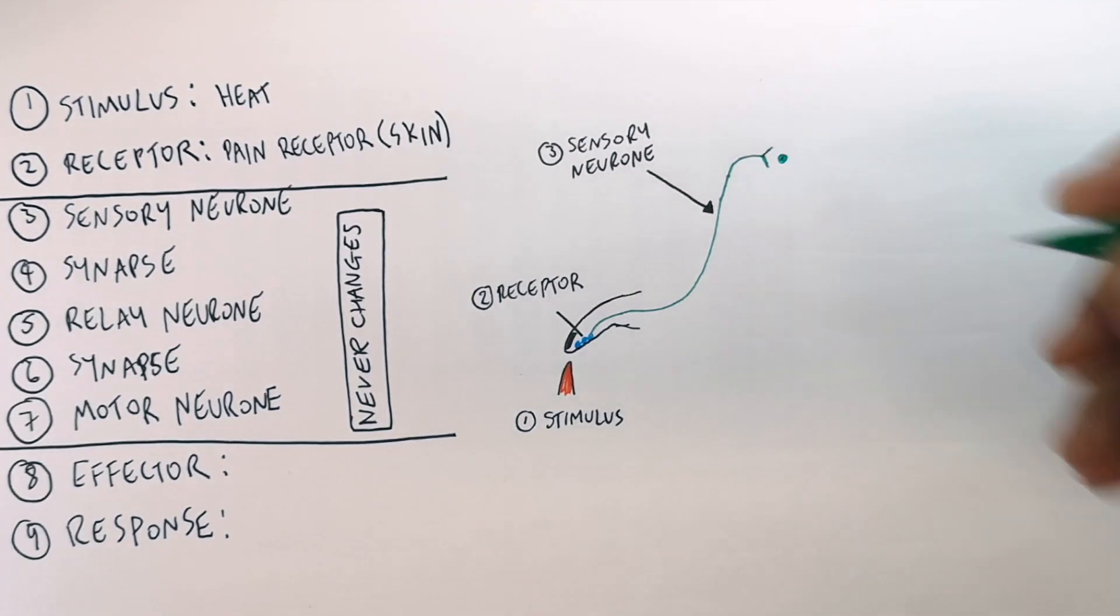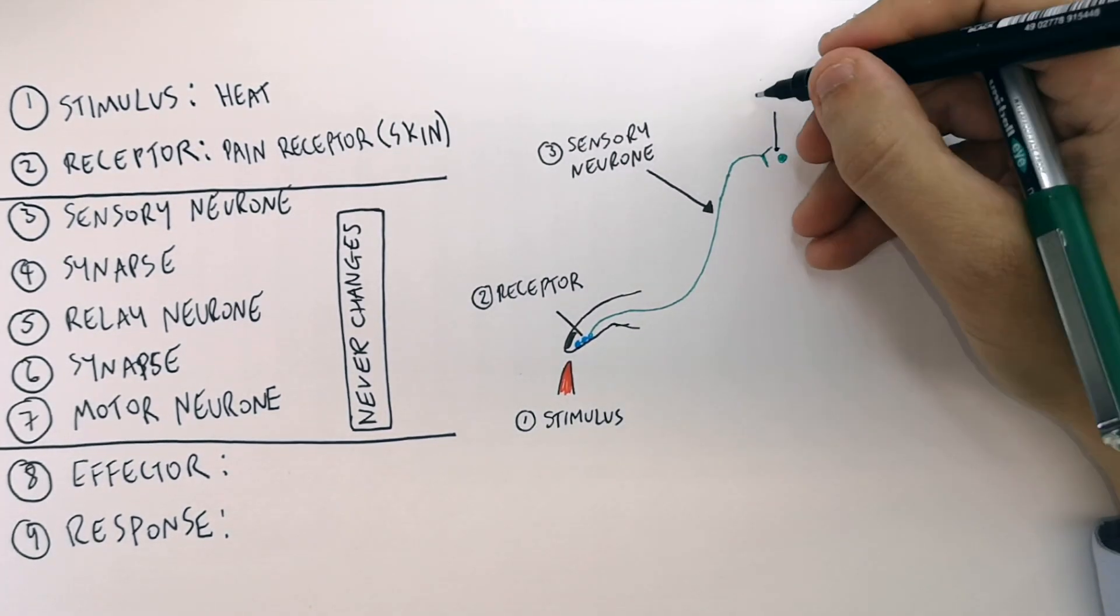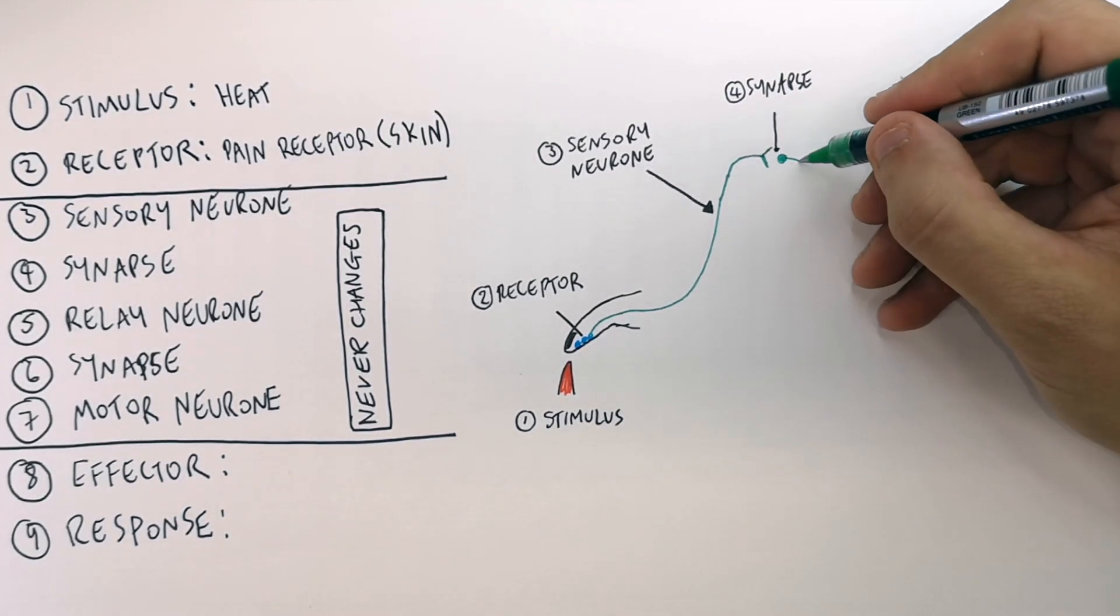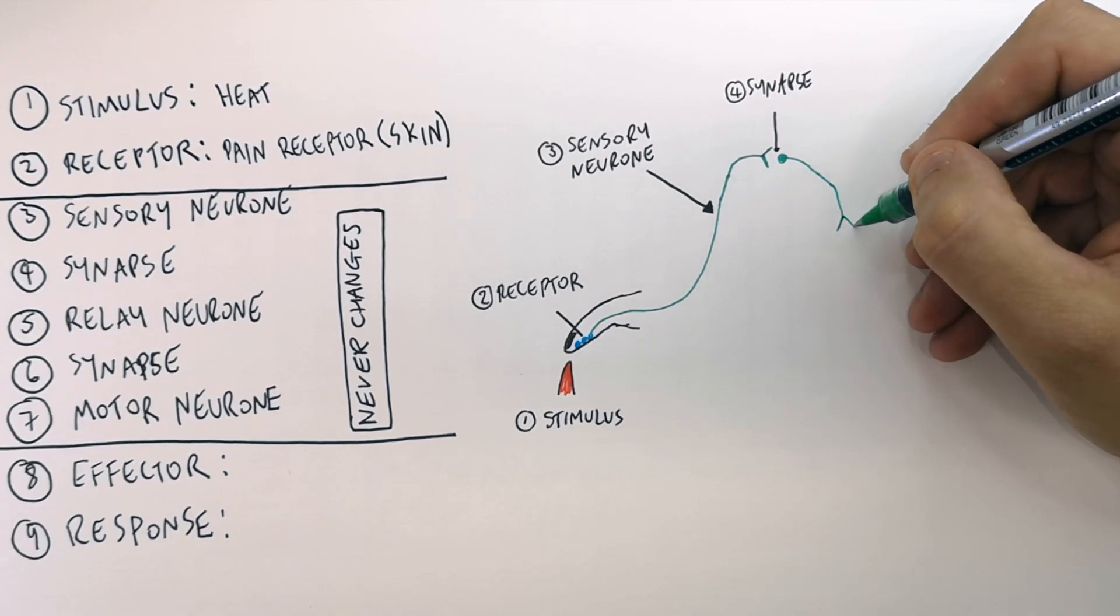Then we get to a synapse, which you learn about in a different video. So the synapse is a gap between two neurons. There's always going to be a synapse between two different neurons.